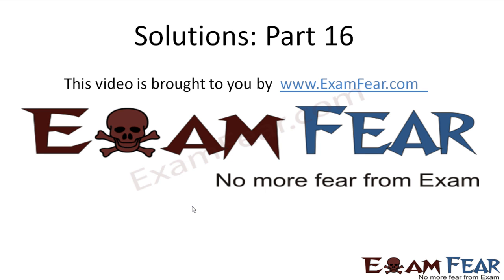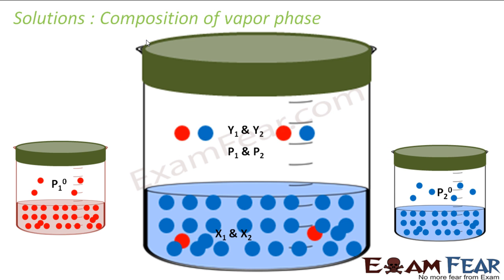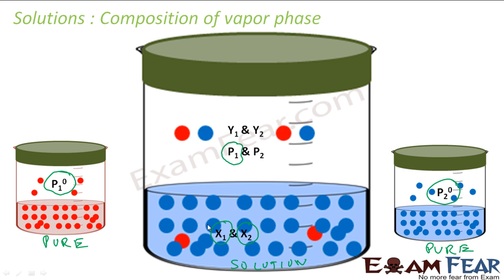This video on solutions part 16 is brought to you by examphere.com. Till now we have seen what is the partial pressure of a component in the pure state — that is P1° and P2°. When you mix them to form a solution, we know the mole fraction of component 1 and component 2, and also the partial pressure due to each component in the vapor phase.